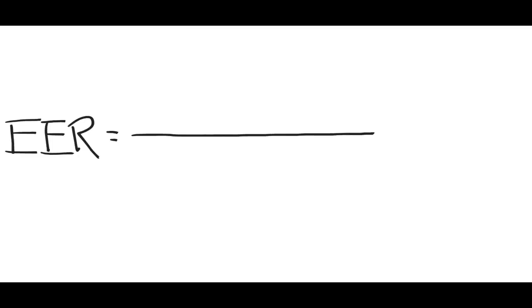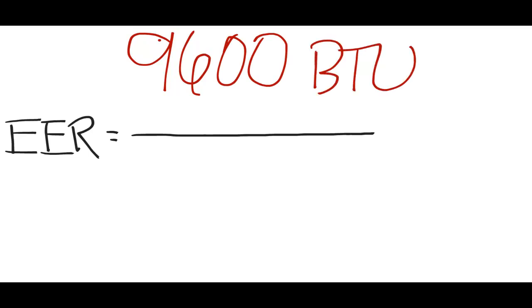Let's do an example. If we know that the evaporator absorbs 9600 BTUs of heat, and the compressor uses 1900 watt-hours of electricity,